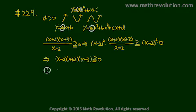So the first option, if y equals x minus 2 times x plus 2 times x plus 3, then a should be 1, which is greater than 0.